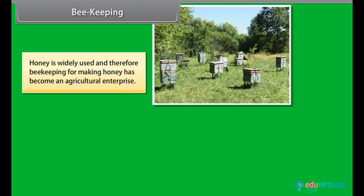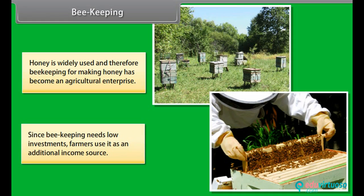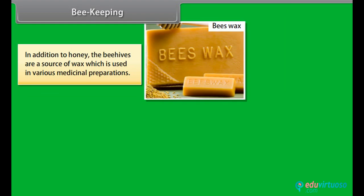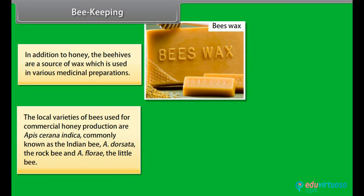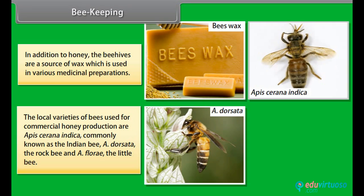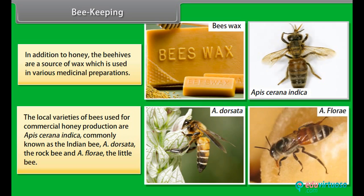Honey is widely used, and therefore beekeeping for making honey has become an agricultural enterprise. Since beekeeping needs low investment, farmers use it as an additional income source. In addition to honey, beehives are a source of wax, which is used in various medicinal preparations. The local varieties of bees used for commercial honey production are Apis cerana indica, commonly known as the Indian bee; A. dorsata, the rock bee; and A. florea, the little bee.